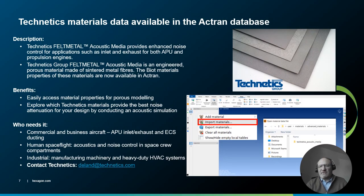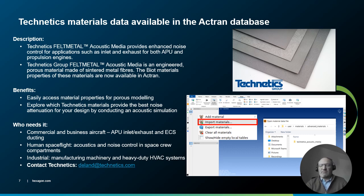Last but not least, for a long time Actron has handled porous materials. In this release, we are including the porous material properties of the Technotex Felt Metal Acoustic Medium family. Technotex materials are widely used in duct applications, such as aeronautics APU and heavy-duty HVAC systems. The user now has direct access to these materials in Actron, making their life easier.